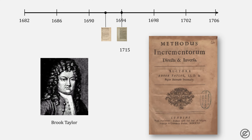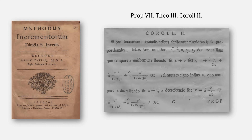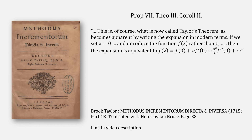Turning back to Methodist, when we look at the end of Proposition 7, we get this corollary — which, if you're confused by this, I don't blame you. Thankfully, there's an English translation given by Ian Bruce. Bruce provides annotations, writing: "This is, of course, what is now called Taylor's Theorem, as it becomes apparent by writing the expansion in modern terms. If we set z equal to zero and introduce the function f of z rather than x, then the expansions will come into Taylor's Theorem."